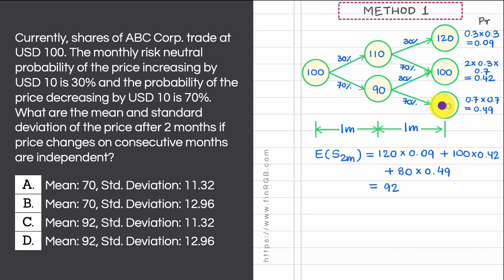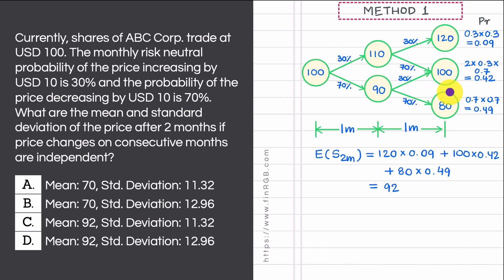After two tosses, the coin tells you which of the three nodes you arrive at. If you run this experiment many times, note the simulated value of S2m at each trial, and take the simple average of all those values, it will turn out to be very close to 92. That is how you interpret the expected value.